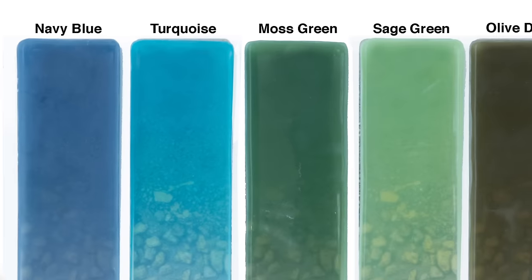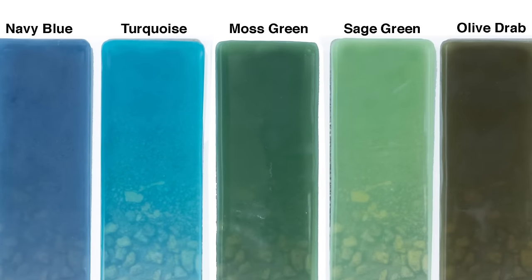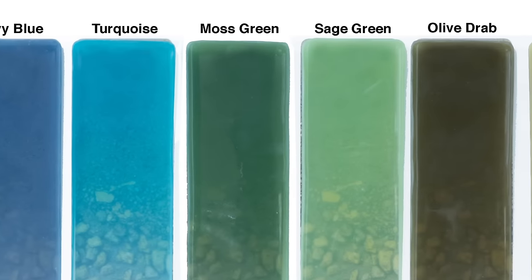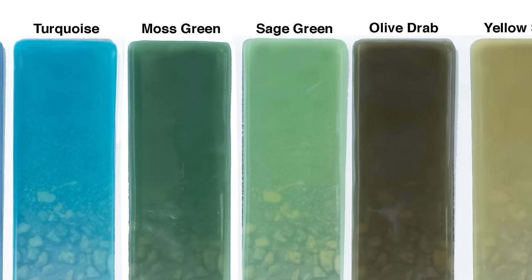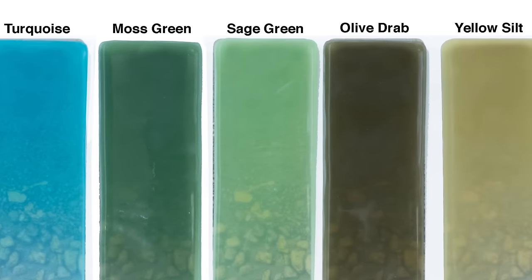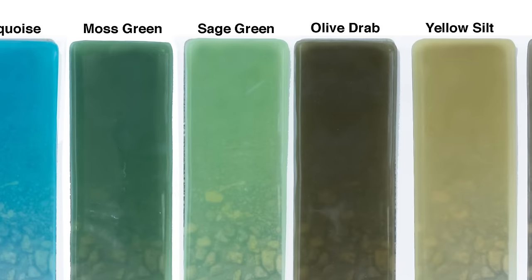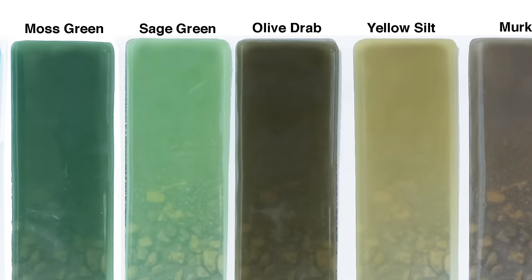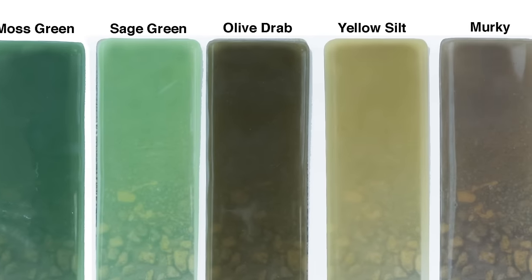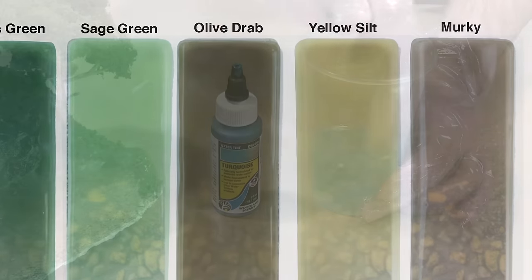Tint colors include navy blue, turquoise, moss green, sage green, olive drab, yellow silt, and murky.